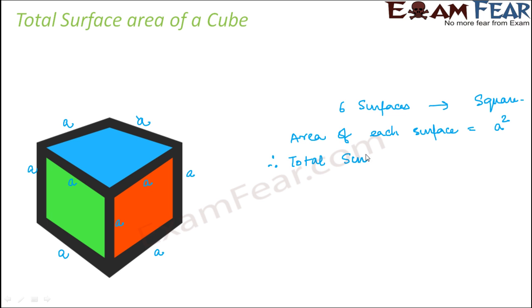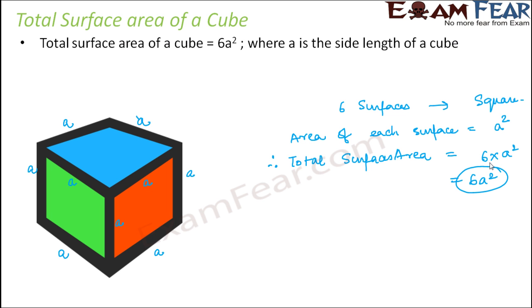Therefore, the total surface area of the cube would be the total area of all the six surfaces. So 6 into A square which is 6A square. We can say that total surface area of a cube is 6A square where A is the side length of the cube. So this is simple.